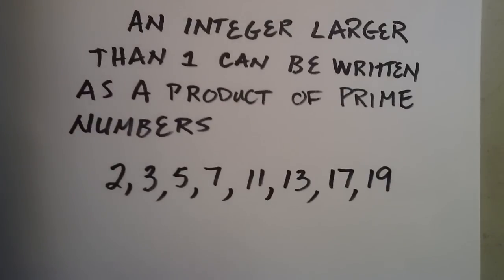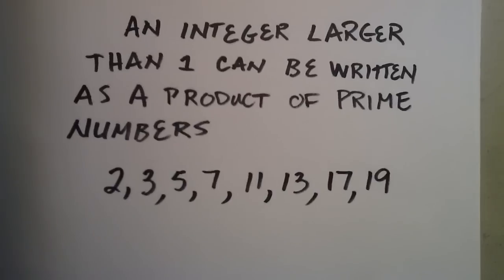So basically what this means is that any number larger than 1 can be written as a product—and by product I mean multiplication—of prime numbers. So I'm going to go ahead and give you a few examples of this.